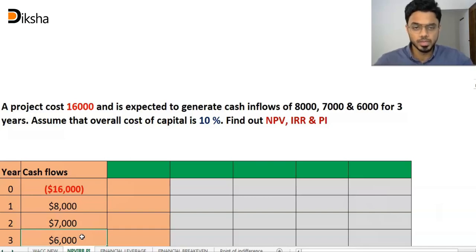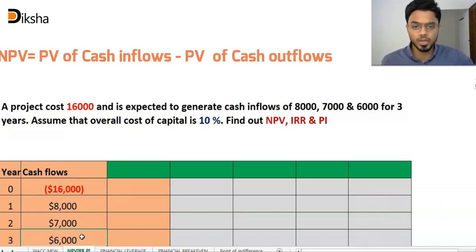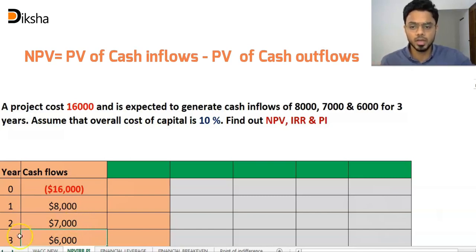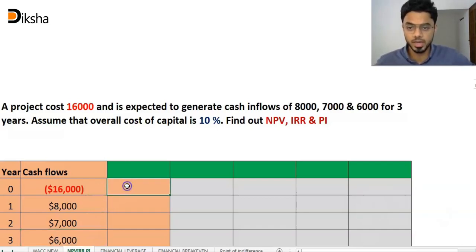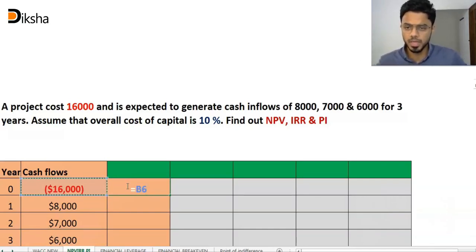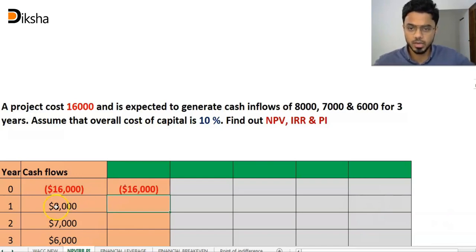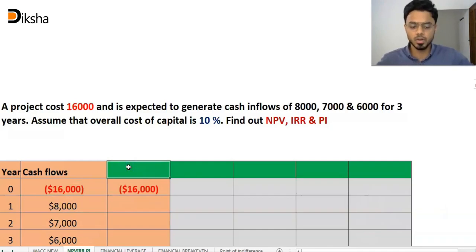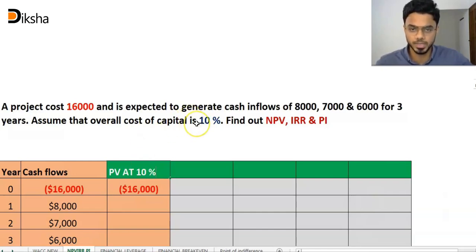NPV is the present value of cash inflows minus present value of cash outflow. The present value of cash outflow is the initial investment. We will convert the cash inflows into present value using the discounting factor. The overall cost of capital is 10%, so the discounting factor is 10%.